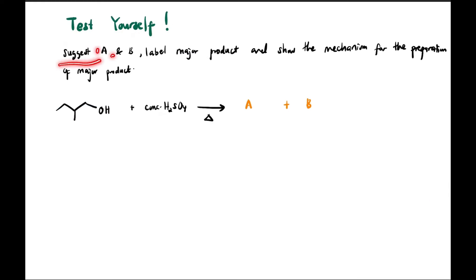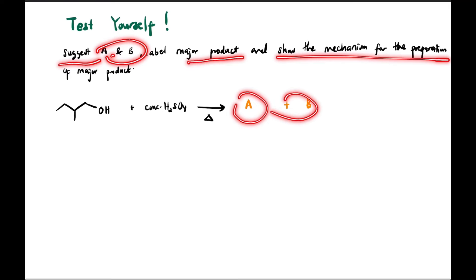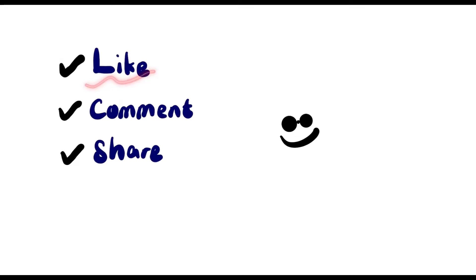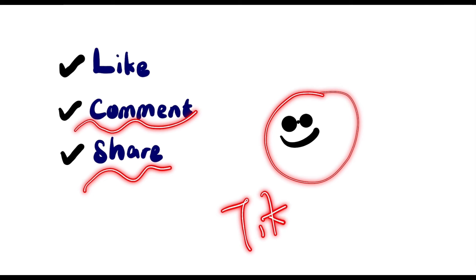Now test yourself with this question such as A and B. Label the major product and show the mechanism for the preparation of major product. You may pause the video to get the final answer. Don't forget to like, comment, and share to your friends and family. And don't forget to follow on TikTok, guys. Thank you, bye-bye!